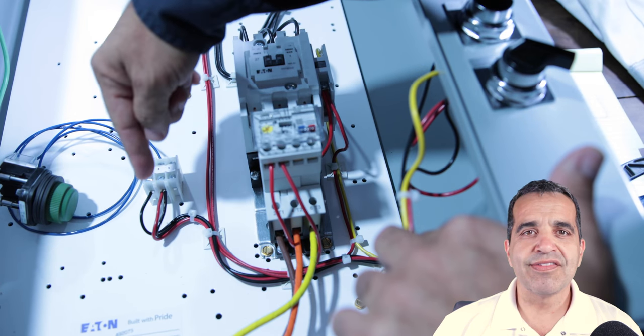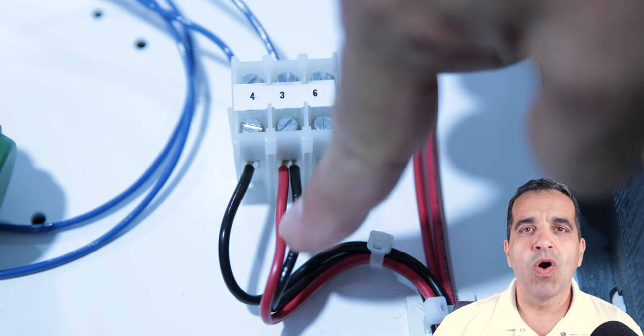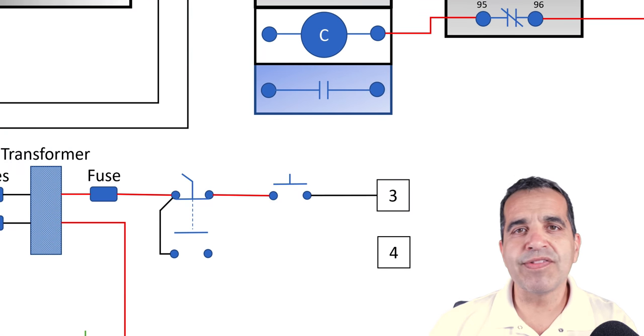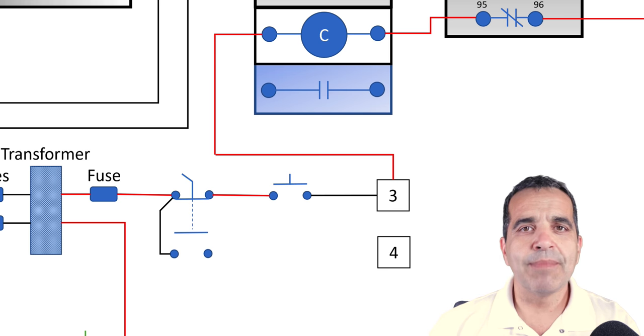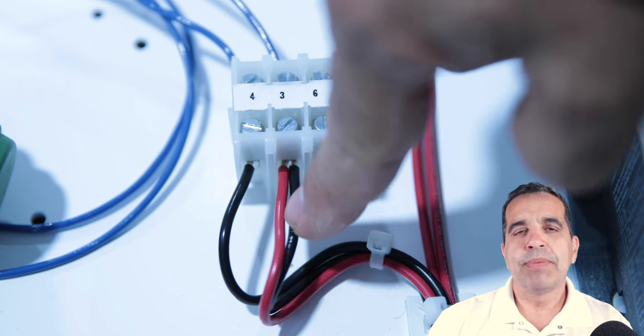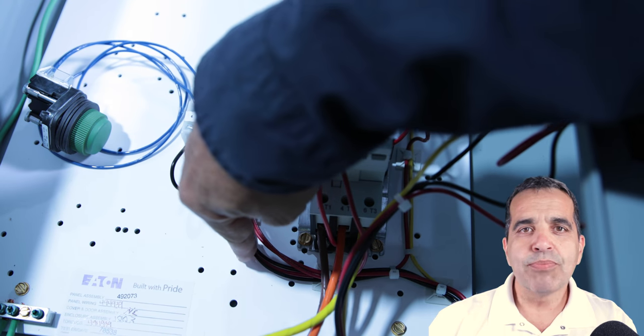It's the black wire coming from our start button to terminal block number three. At terminal block number three, we see a red wire that's jumpered there, and that jumper is coming up to the other side of our coil, finishing our 120-volt loop. But this would only work if we were to push the button and hold the button.